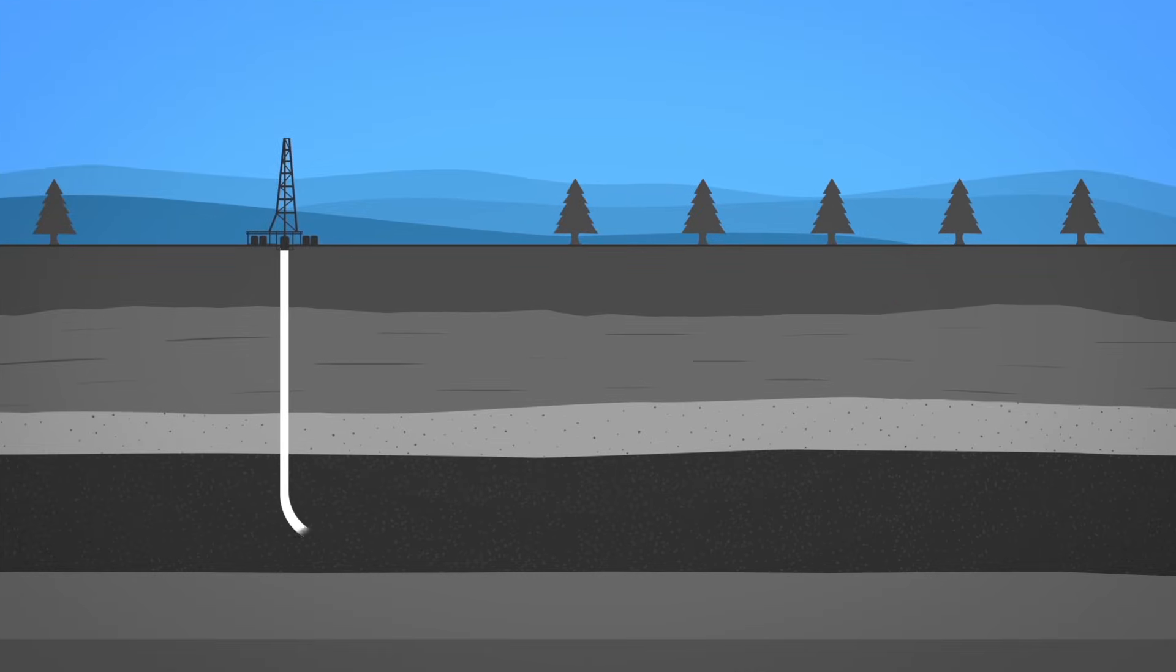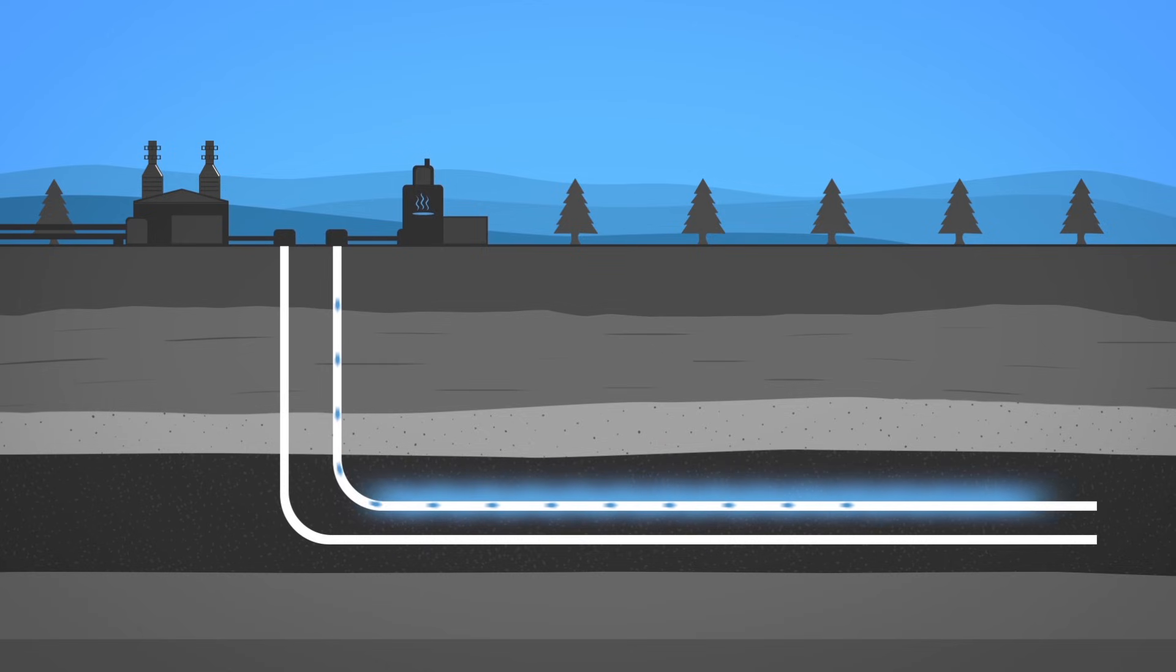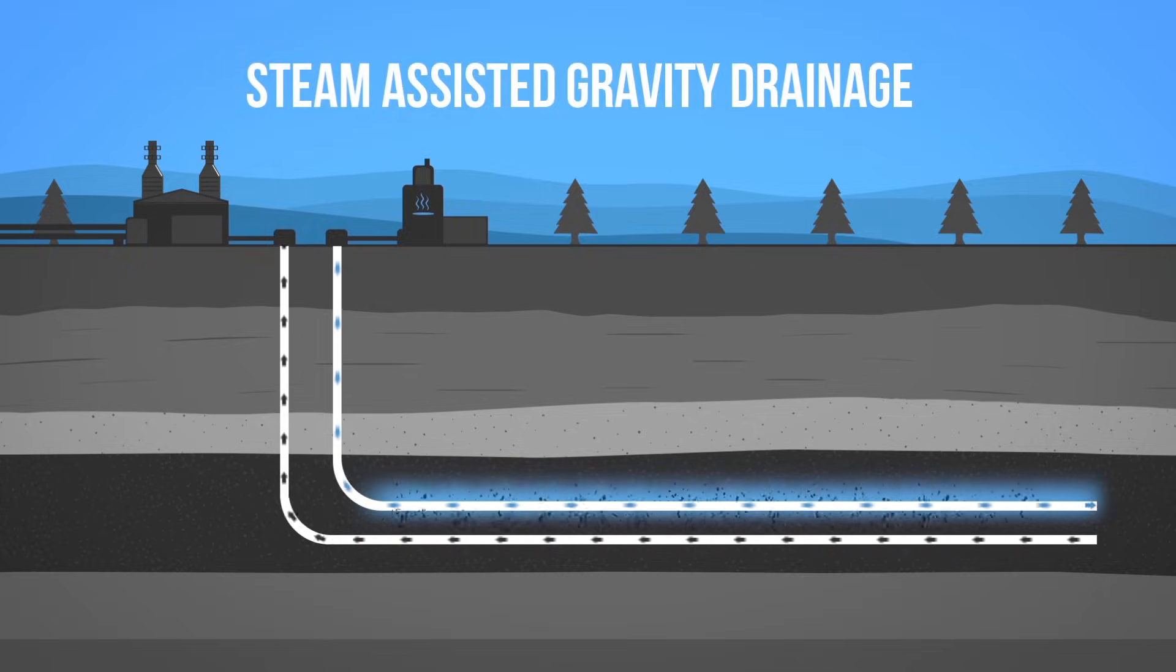Around 80% of the oil sands are found 75 metres below the surface and to extract them, in situ or underground methods must be used. The majority of the in situ operations pump steam underground through horizontal wells with the purpose of liquefying the bitumen, which can then be pumped up to the surface, a method called steam-assisted gravity drainage.